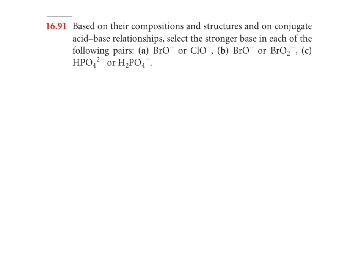So for part A, we have BrO⁻ or ClO⁻. Looking at those two, there's a couple ways we can look at it. One way to look at it is based on what they are usually as acids. Let's take that approach first because that's most in line with your video lectures. We have BrO⁻ and ClO⁻. As acids, this would be HBrO, HClO.